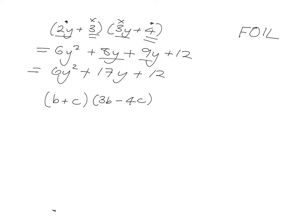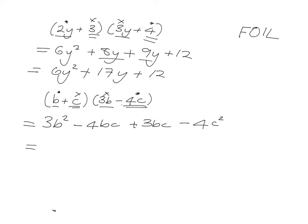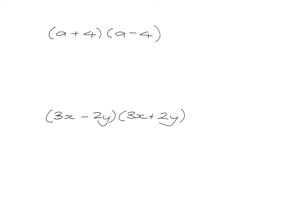The next one: (b+c)(3b-4c). First: b times 3b gives 3b squared. Outside: b times negative 4c — positive times negative is negative — gives minus 4bc. Inside: c times 3b gives 3bc. Last: c times negative 4c gives minus 4c squared. We look for like terms — minus 4bc and 3bc combine to give minus bc. So the answer is 3b squared minus bc minus 4c squared.